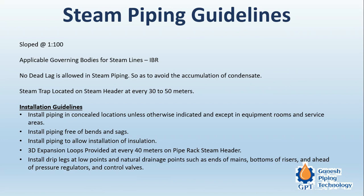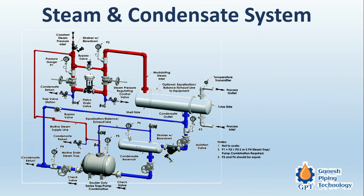Install drip legs at low points and natural drainage points such as ends of mains, bottom of risers, and ahead of pressure regulators and control valves. Control valves are used for stepping down steam pressure. For example, if the main header pressure is 15 bar and different systems require 8 bar, 5 bar, or 10 bar, a control station steps down the pressure. The control valve is set at the required pressure for each system.